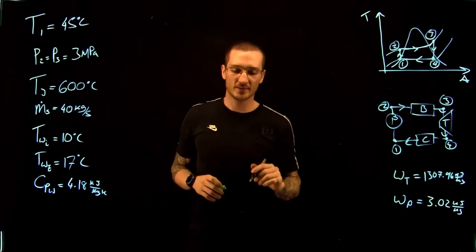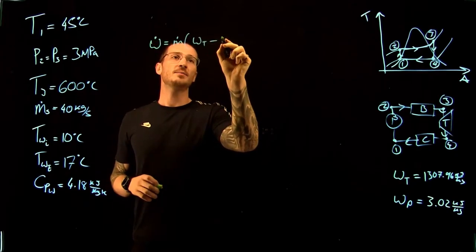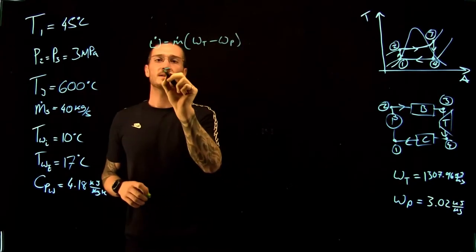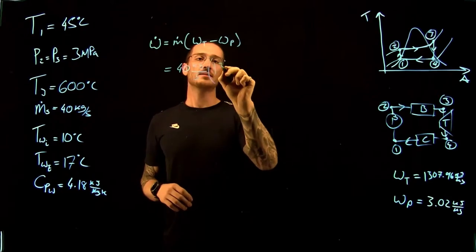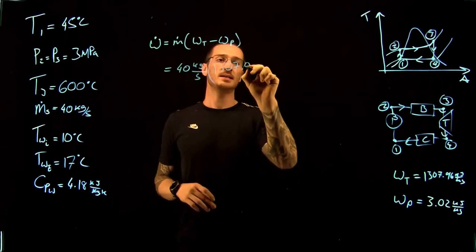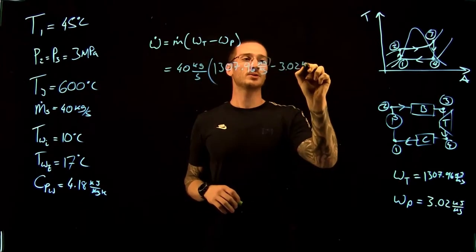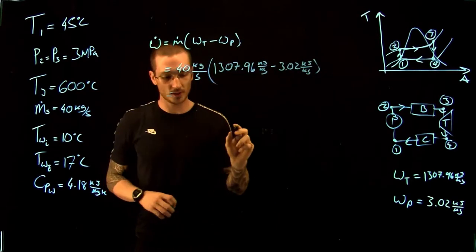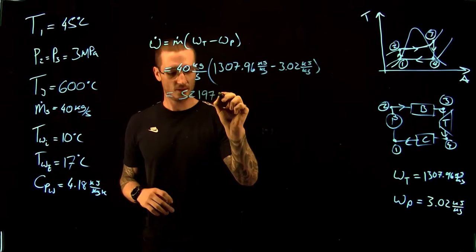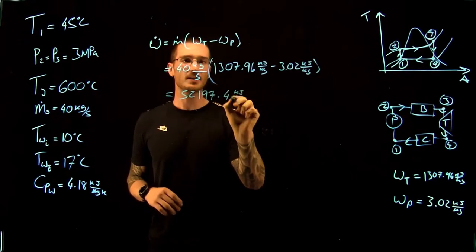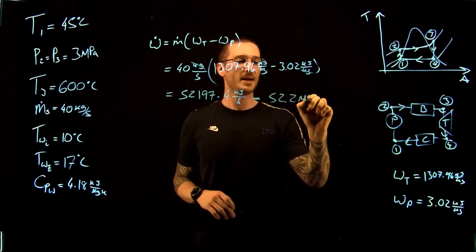We're now ready to solve for the power output. The power output equals the mass flow rate times the specific work of the turbine minus the specific work of the pump: 40 kg/s times (1307.96 minus 3.02) kJ/kg, giving 52,197.4 kJ per second. The kilograms cancel out, and this equals 52.2 megawatts.